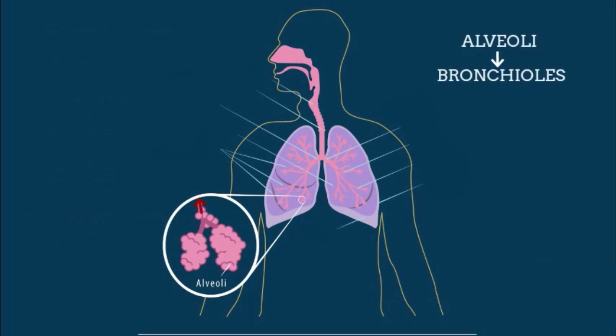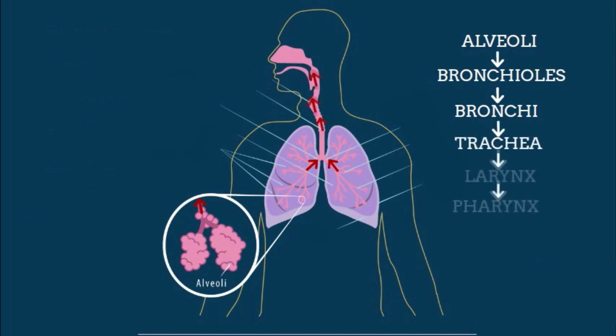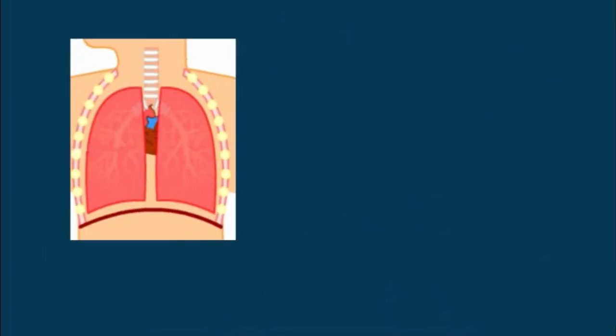When breathing out, air flows out from the alveoli into the bronchioles and is redirected to the bronchi. Air then converges to the trachea and passes through the nasopharynx and oral pharynx, flowing out through the nostrils.